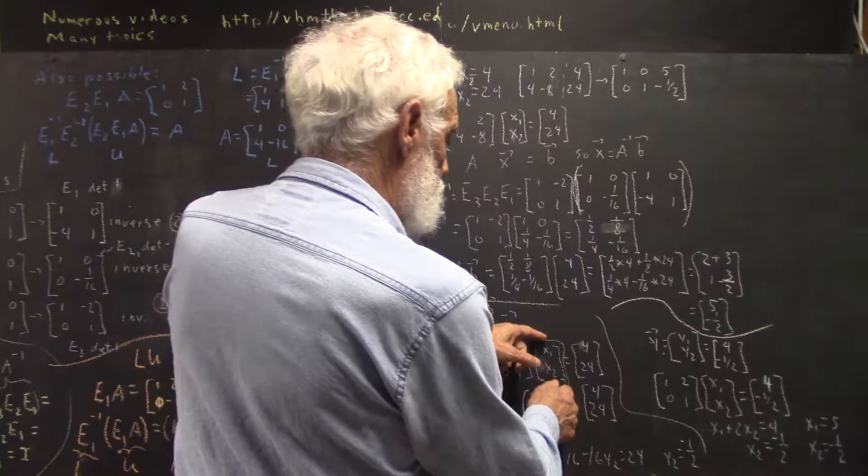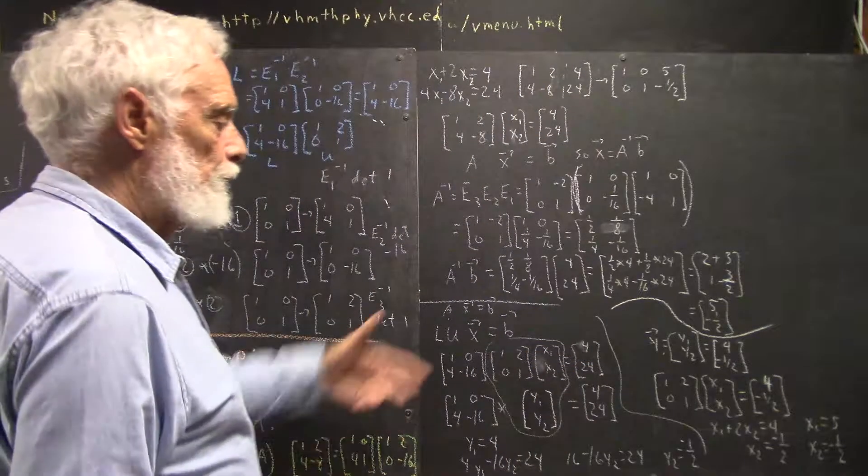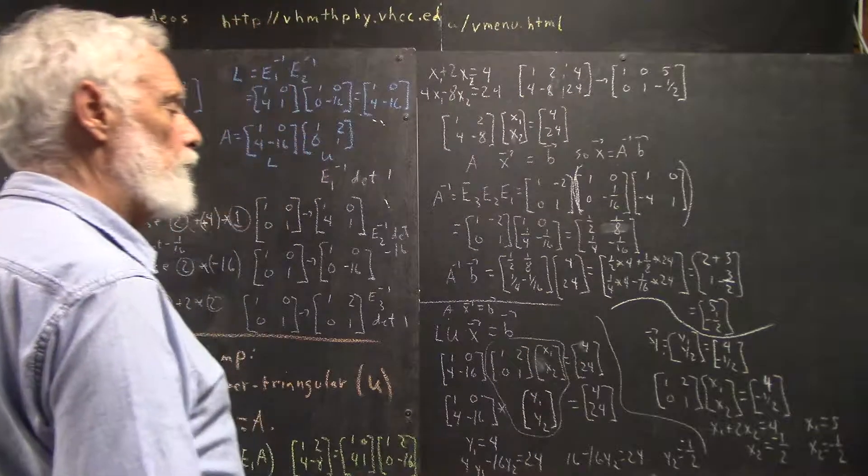LU, well, here's L, here's U. Now, this matrix times this matrix times X1, X2 should equal 4, 24.